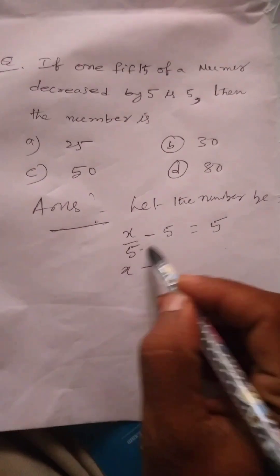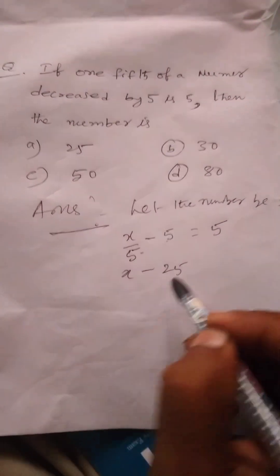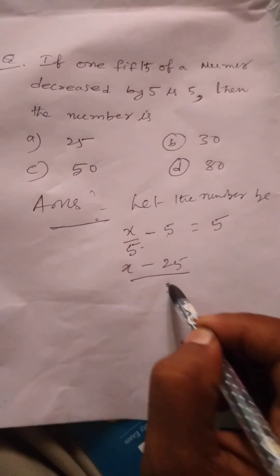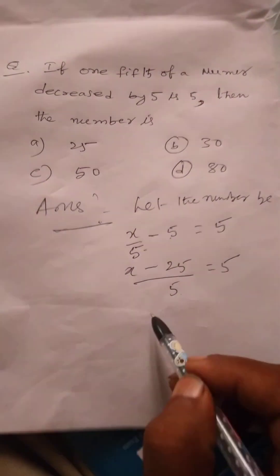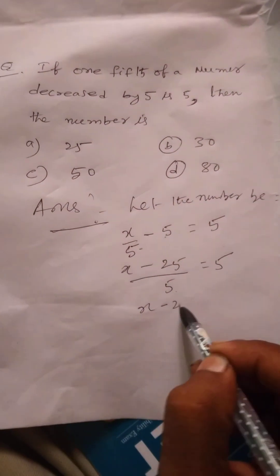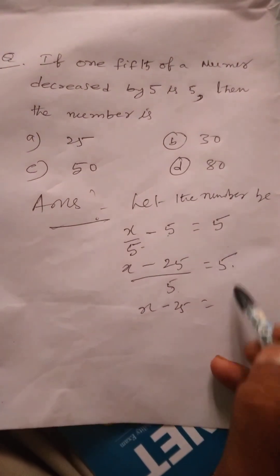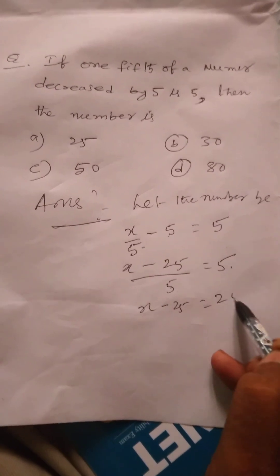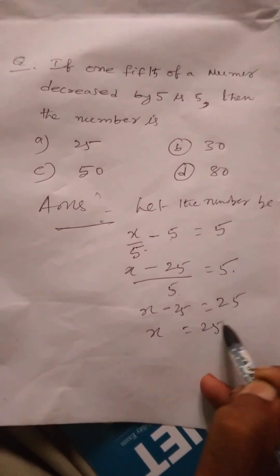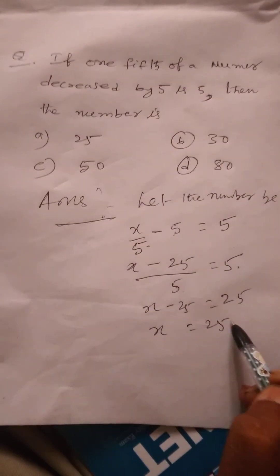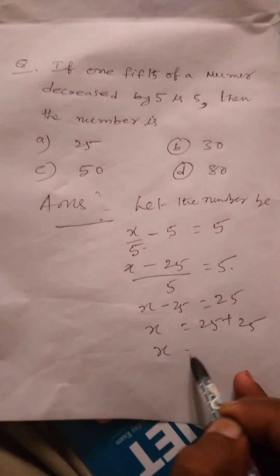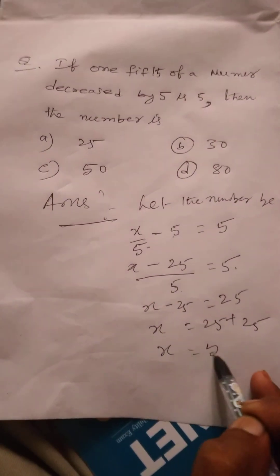So, X divided by 5 minus 5 equals 5. Multiplying through: X minus 25 equals 25. Therefore, X equals 25 plus 25, which gives X equal to 50.